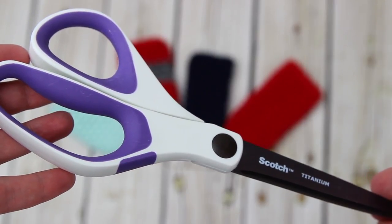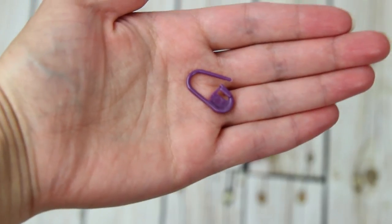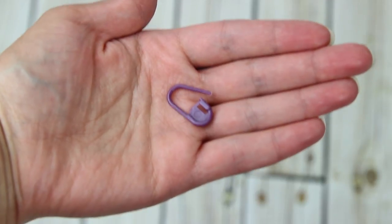Scissors. A yarn needle for weaving in your ends. And this one is optional. I didn't use this in the tutorial but if you need to you can use a stitch marker to keep track of your rows. Let's get started.